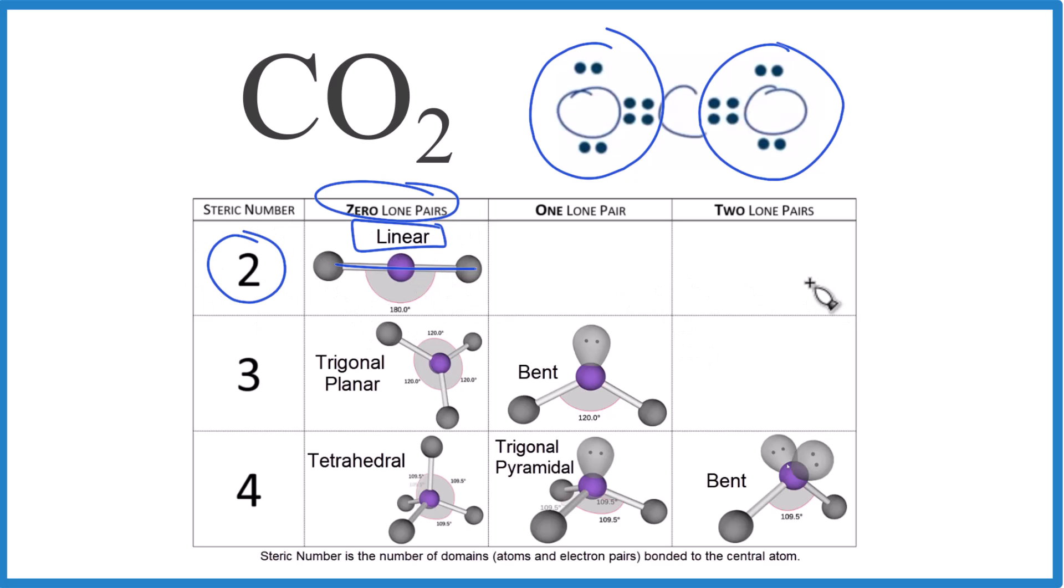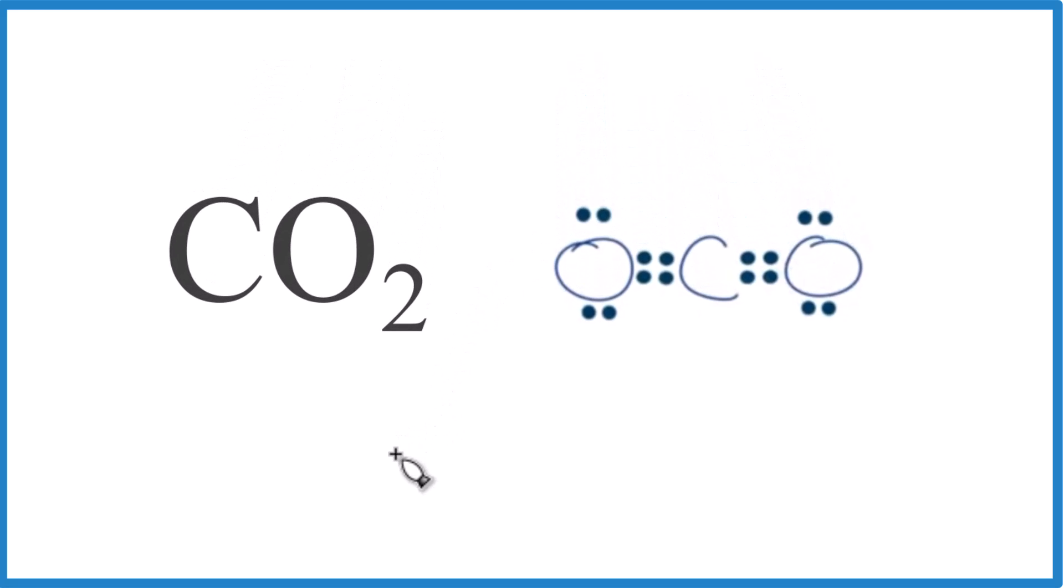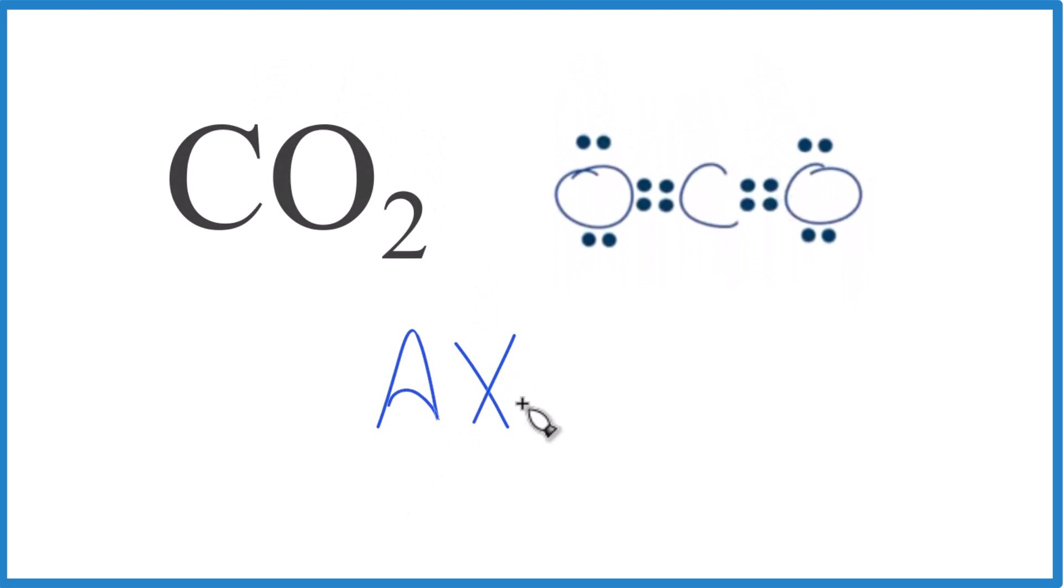You could use what's called the AXE notation, sometimes AXN. A is the central atom. X, that's the number of atoms bonded. We have one, two of those. E, that's the number of lone pairs. And we don't have any lone pairs. All of these are in chemical bonds.